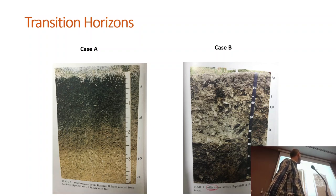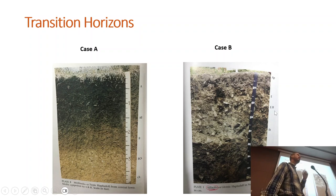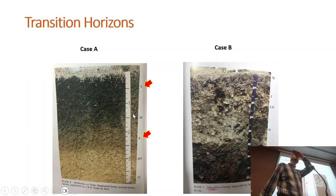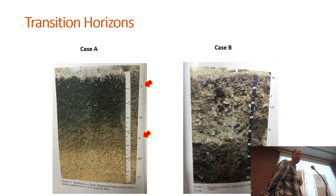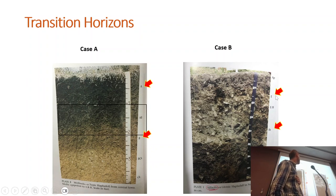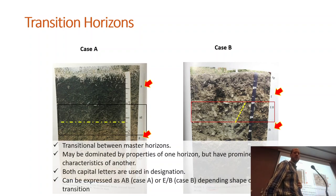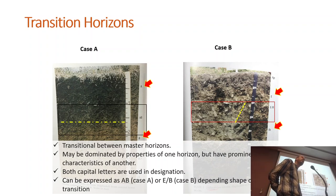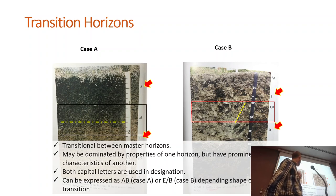Transition horizons such as AB or EB occur when you have properties of both horizons and a gradient change rather than a clear line. That part where the gradient occurs is separated and named as a transition — for example AB or EB. When transitioning between master horizons, the letter for the predominant horizon comes first. So EB still has more E properties, while BE has more B properties.